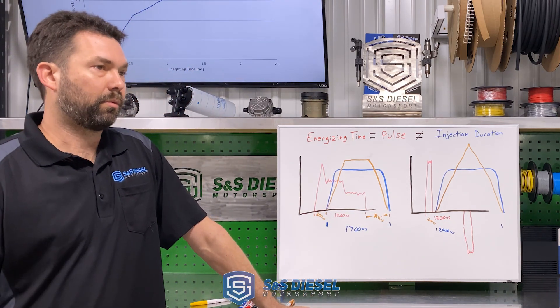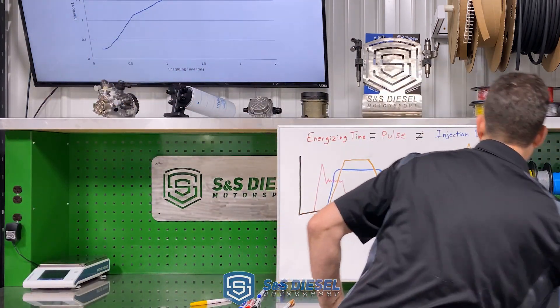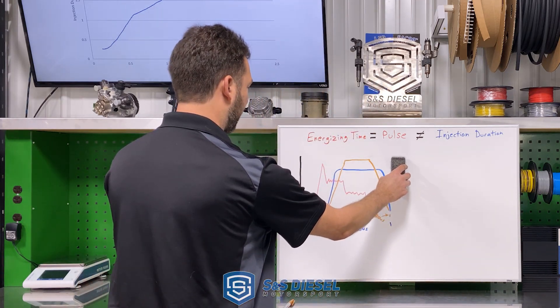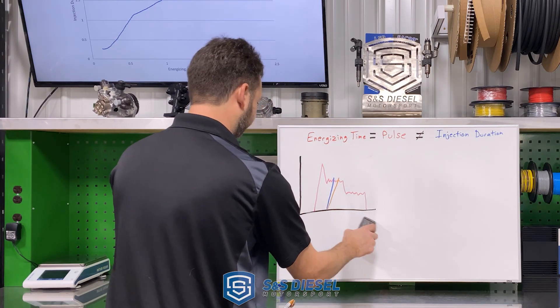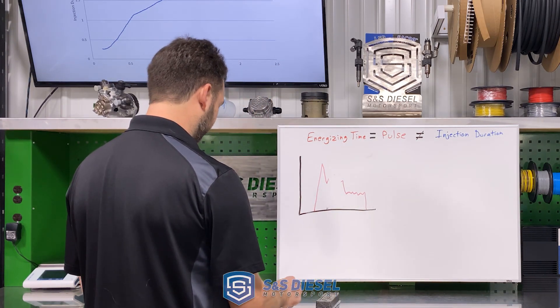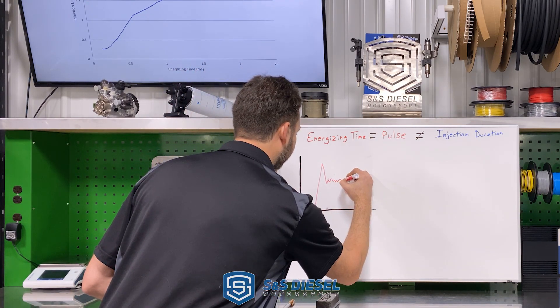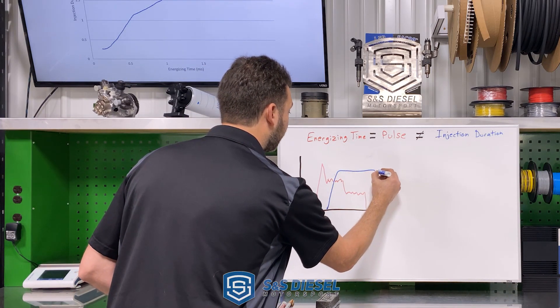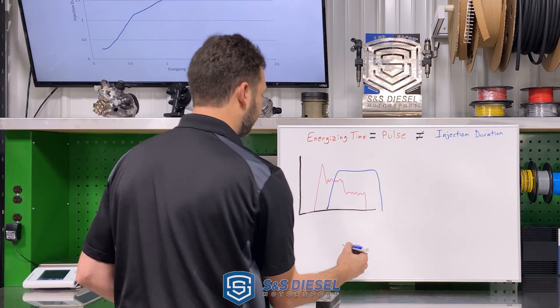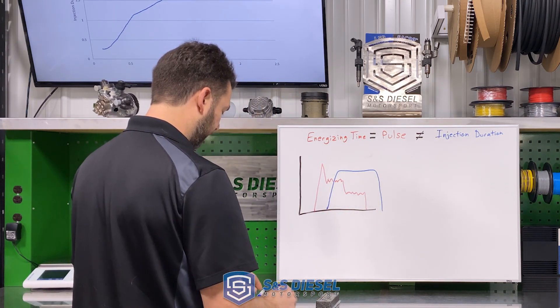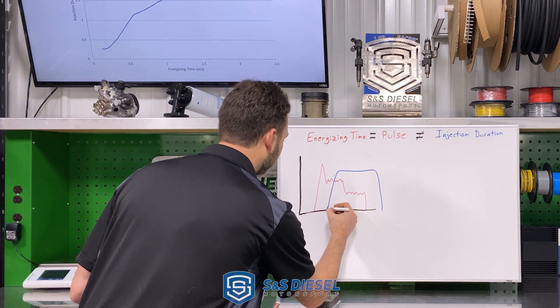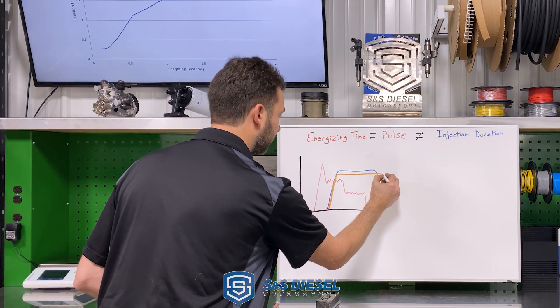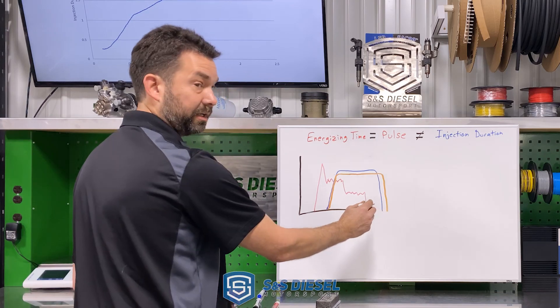The next thing would be, why does this matter? Well, what we see with a lot of aftermarket injectors, not all, is that people will bandaid their injector builds for nozzle flows that are not consistent. So you'll see a rate shape like that on an injector, but then they have another one that has a little bit different nozzle flow, a little bit lower. So it's not getting quite the peak rate, but they want the same quantity. So they extend the end of injection to get the quantity the same.